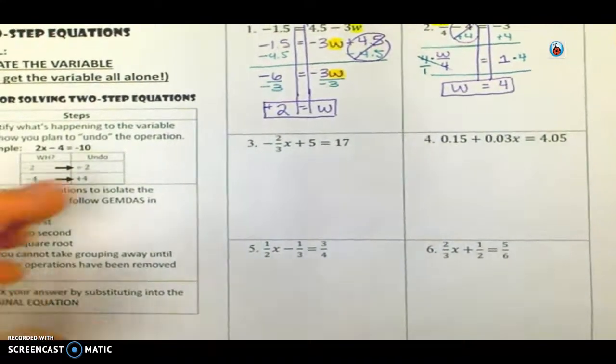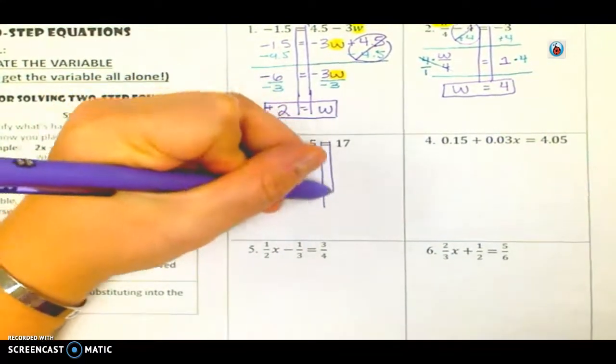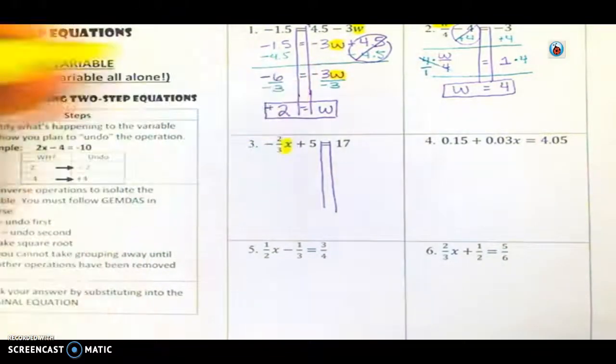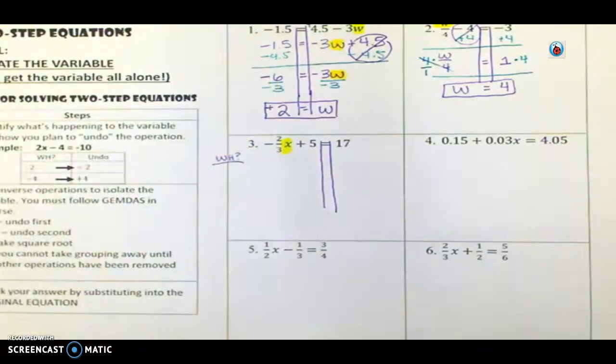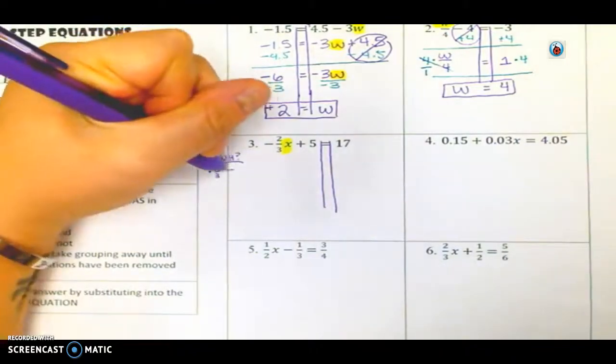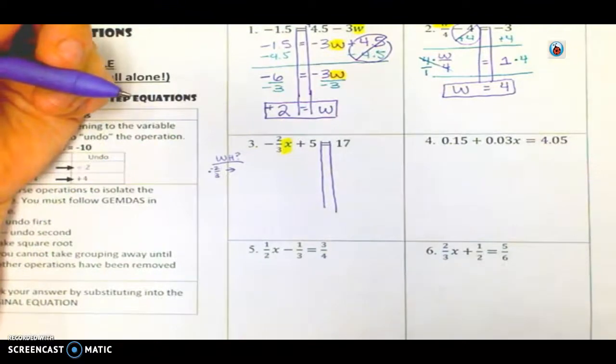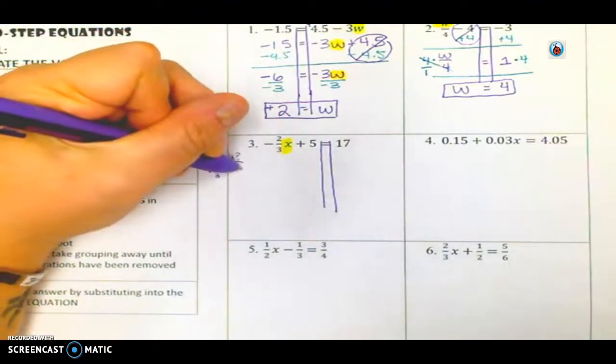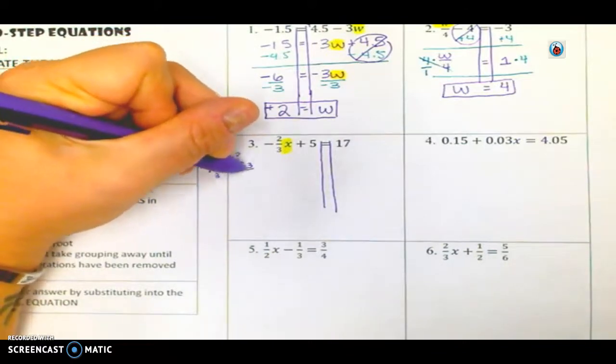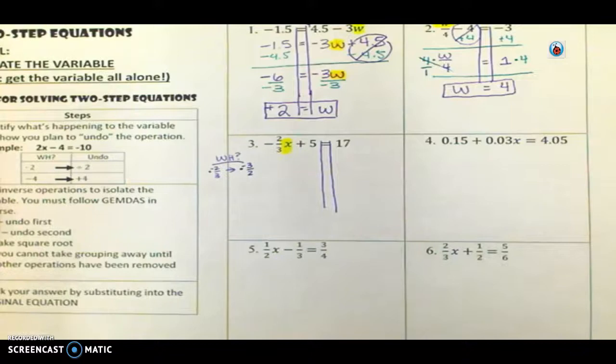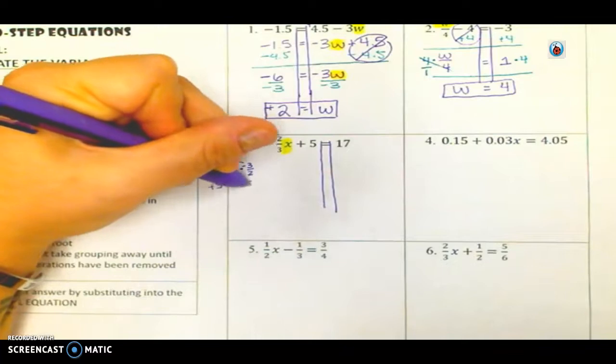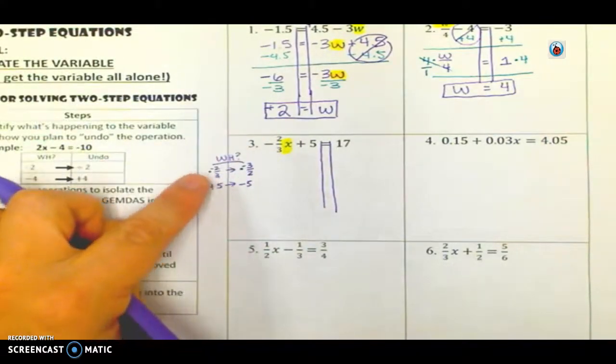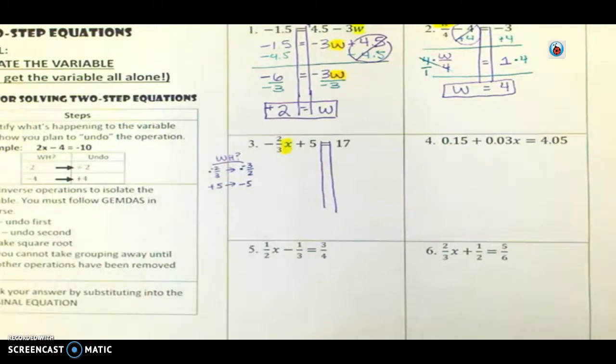Number 3. Put in those railroad tracks. Pay attention to where your variable is. So something else that I also like to do is this is like my little what's happening corner to kind of organize my thoughts. I'm multiplying by a negative 2 thirds. So how am I going to undo that? I'm going to divide by a negative 2 thirds. But when you divide by a fraction, remember, that really means that it's going to multiply by the reciprocal. So that's how we're going to undo it. Because dividing by 2 thirds is the same as multiplying by 3 over 2. So I just have a negative here. And so then I'm adding 5. So the opposite of that is subtracting 5.